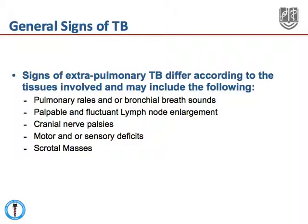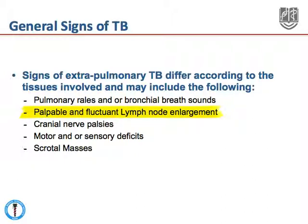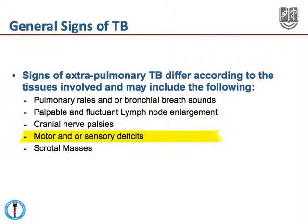The signs of TB differ according to the tissues involved. For example, in the lung there may be pulmonary rales and/or bronchial breath sounds. If there is lymph node enlargement, there may be palpable and fluctuant lymph nodes. There may be cranial nerve palsies in TB meningitis, and motor or sensory deficits. If there is epididymal TB, scrotal masses may be present.